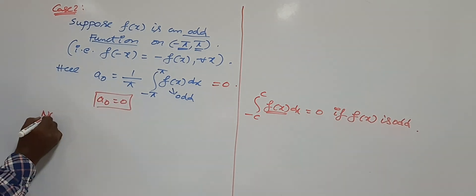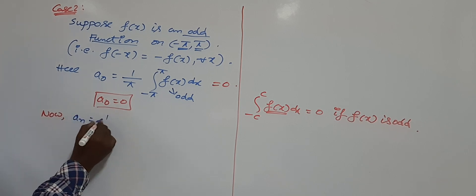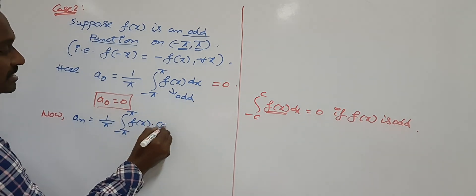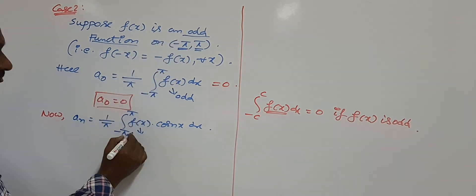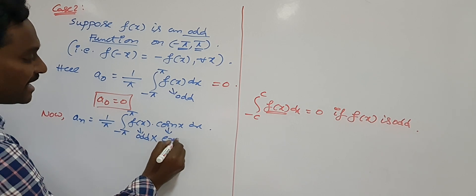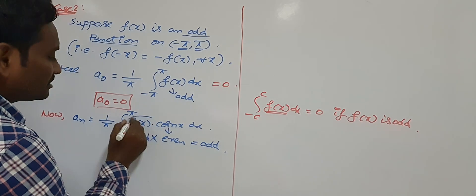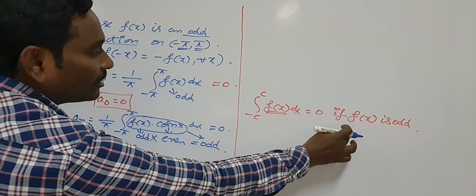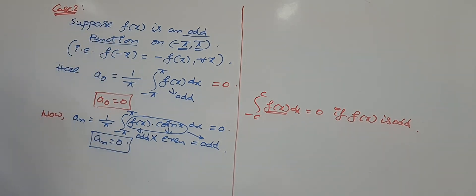Now look at aₙ. aₙ = (1/π)·∫₋π^{+π} f(x)·cos(nx) dx. Here f(x) is odd and cos(nx) is an even function. Odd times even is odd, so the entire integrand becomes an odd function. Its integration over a symmetric interval is 0. So aₙ is also 0.